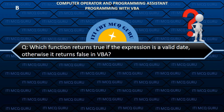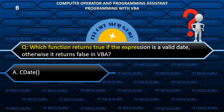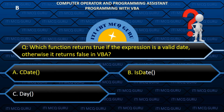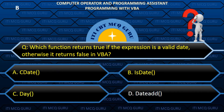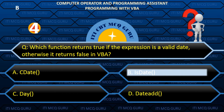Which function returns true if the expression is a valid date, otherwise returns false in VBA? Answer: A/B. ISDATE.